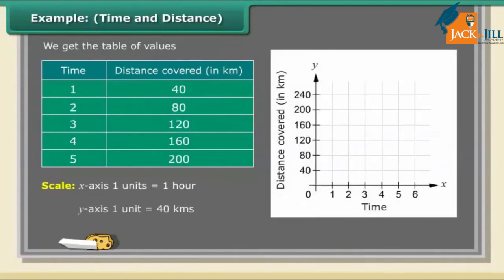(c) Plot the points (1,40), (2,80), (3,120), (4,160), (5,200). (d) Join the points. We get a linear graph.